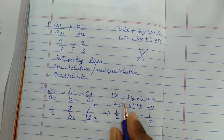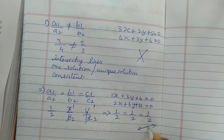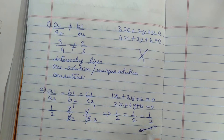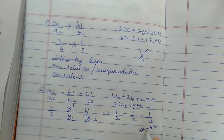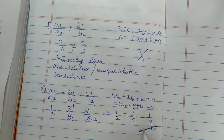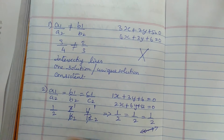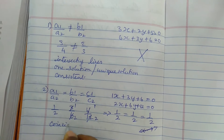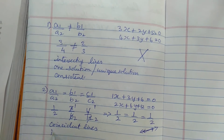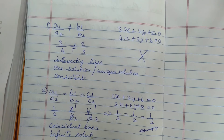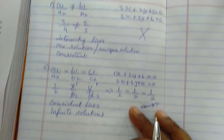When this condition is met, the two equations produce coincident lines — one line lies exactly on top of the other. The overlapping portion contains infinitely many solutions, so these equations give infinite solutions. Since they do give solutions, the equations are said to be consistent.